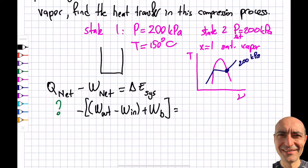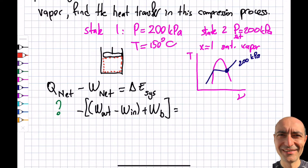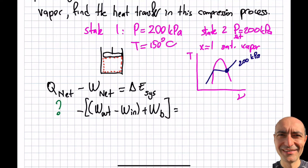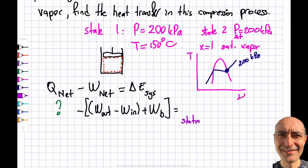We have a sealed piston-cylinder device, so this is a control mass. It is stationary — it's not going anywhere — but its shape is changing as we compress from State 1 to State 2. Since it's stationary, delta E of the system equals U2 minus U1.